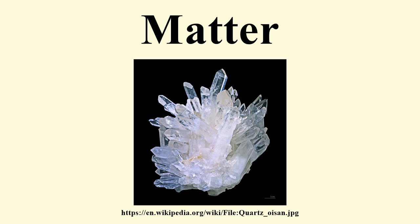Degenerate matter includes the part of the universe that is made up of neutron stars and white dwarfs. Strange matter is a particular form of quark matter, usually thought of as a liquid of up, down, and strange quarks. It is contrasted with nuclear matter, which is a liquid of neutrons and protons, and with non-strange quark matter, which is a quark liquid that contains only up and down quarks. At high enough density, strange matter is expected to be color superconducting. Strange matter is hypothesized to occur in the core of neutron stars, or, more speculatively, as isolated droplets that may vary in size from femtometers to kilometers.